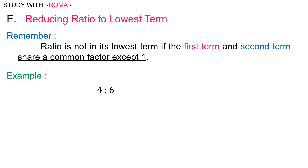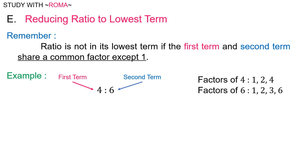Let's have an example: four is to six. Four is the first term. Six is the second term. The factors of four are one, two, and four. The factors of six are one, two, three, and six. Aside from one, four and six share a common factor which is two. So four is to six is not in its lowest term. In order to reduce to lowest term, divide both terms by two. Four divided by two is to six divided by two, which is equal to two is to three.